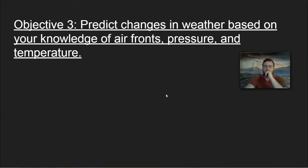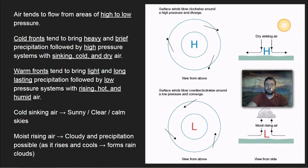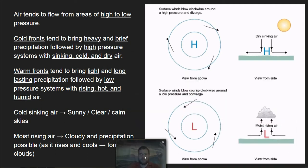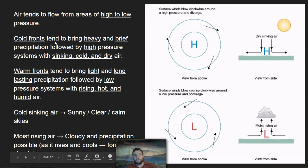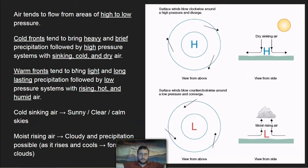To use all this information to predict weather, remember the two primary systems. A cold front brings heavy, brief precipitation, preceded by a drop in pressure. After the cold front passes, there's a high pressure system with sinking cold, dry air, producing clear sunny skies but colder weather. Air flows from cold to hot regions, moving from high to low pressure. High pressure from cold air produces sunny, calm, clear skies.